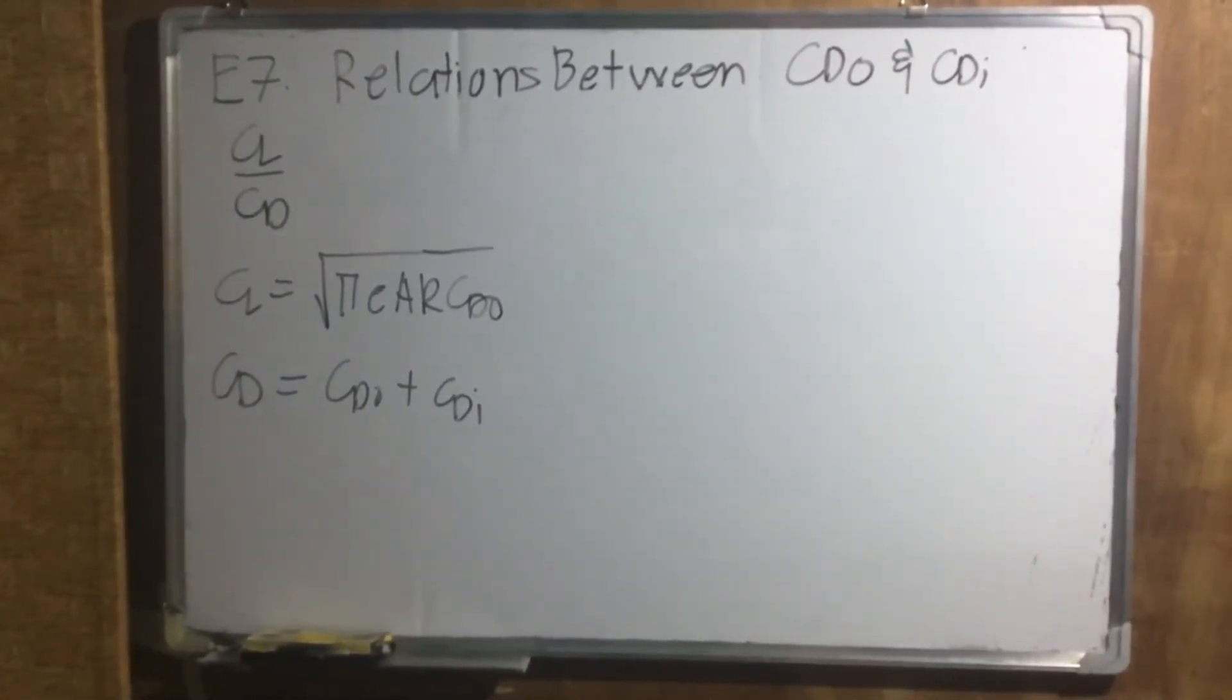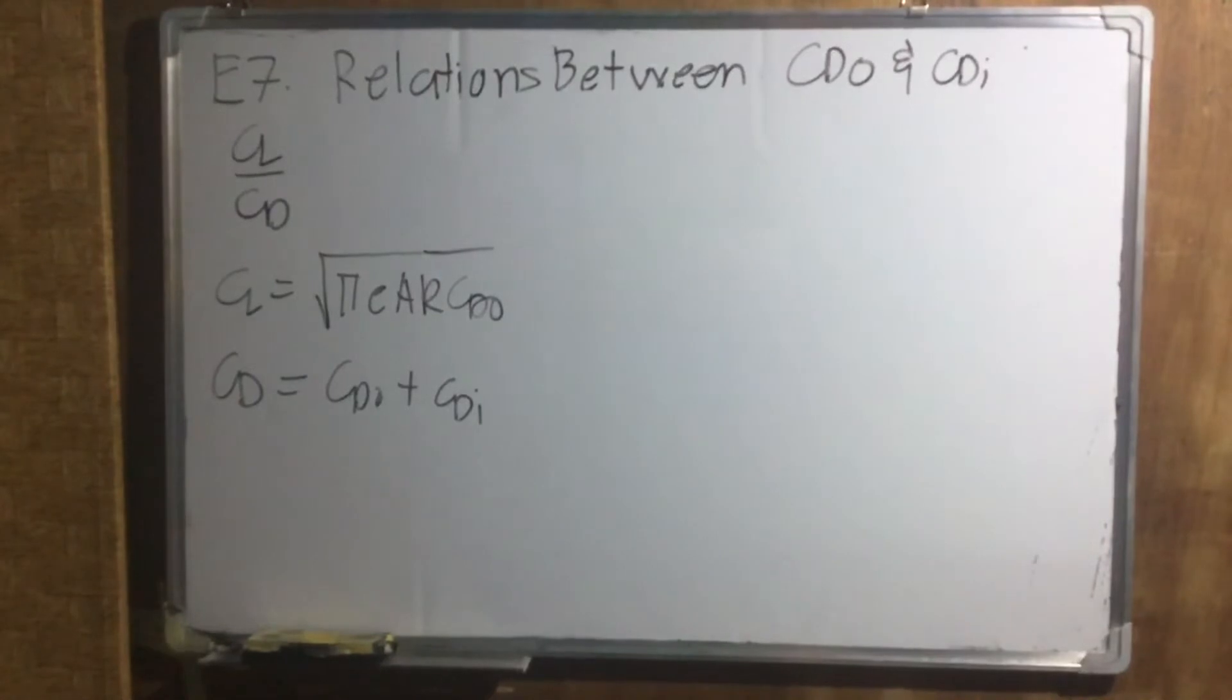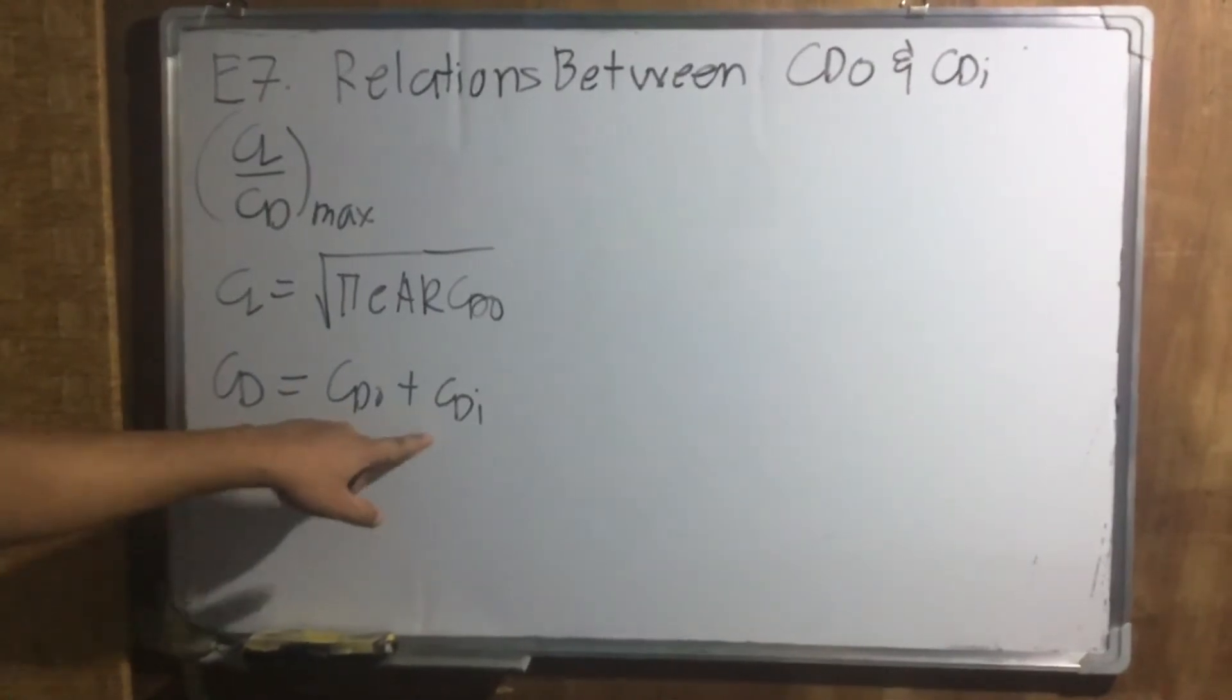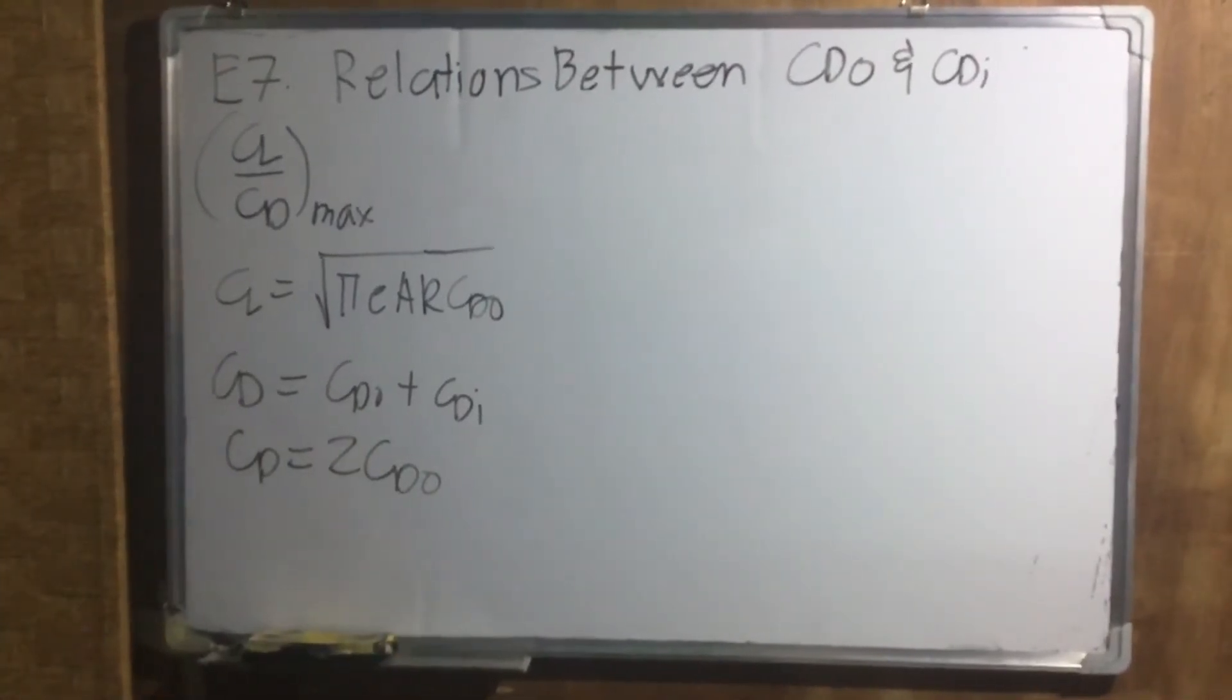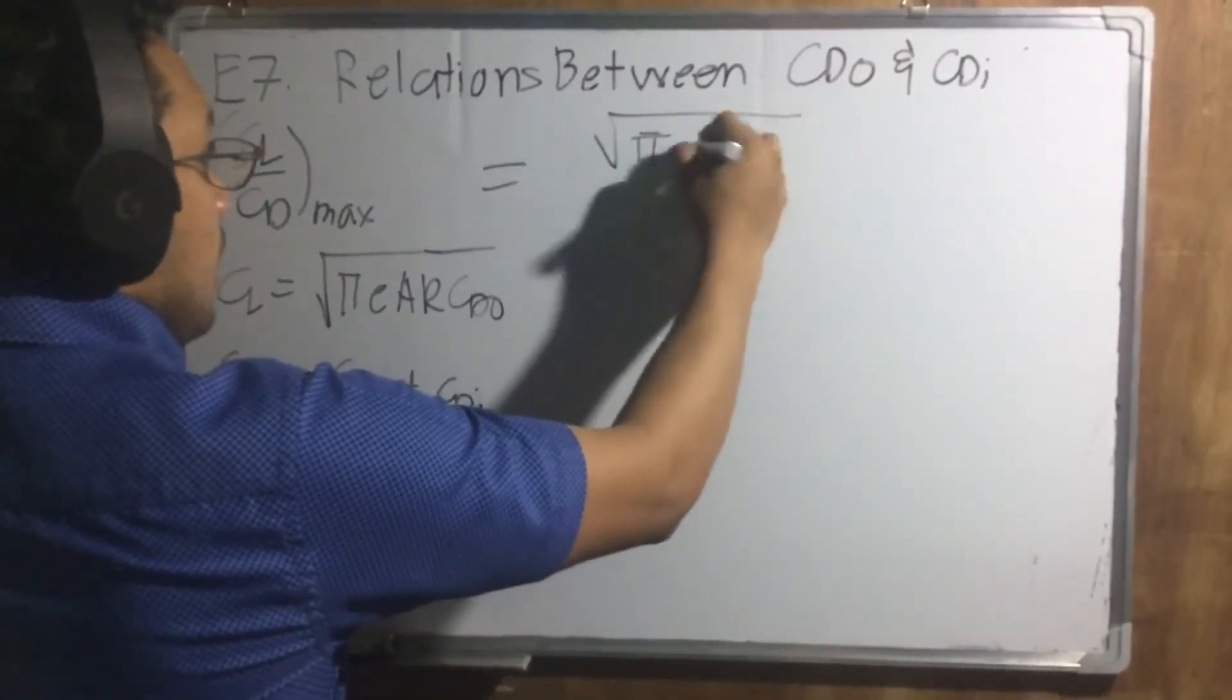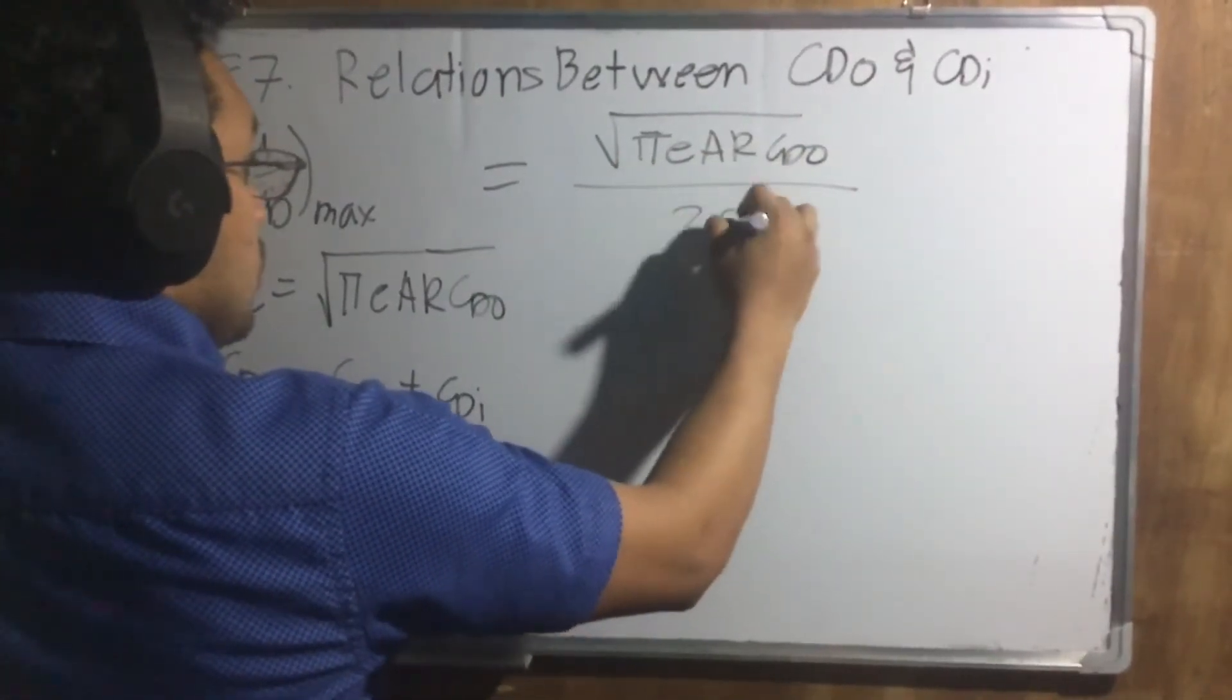We all know that CDO and CDI, when this is maximum, when max, we know that CDO and CDI are equal. So CD is equals to 2 CDO. Now, just derive it. Just put the CL on top and this CD, 2 CDO on the bottom. You will get square root of pi E AR CDO over 2 CDO.